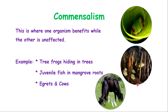The next type is commensalism, where one organism benefits and the other is unaffected. Three pictorial examples are shown. First, a tree frog within a leaf — the tree frog hides in leaves for protection from predators and from the sun, gaining shade to maintain moisture. Curled leaves also capture water, so the frog can cool down or camouflage itself within the leaf.